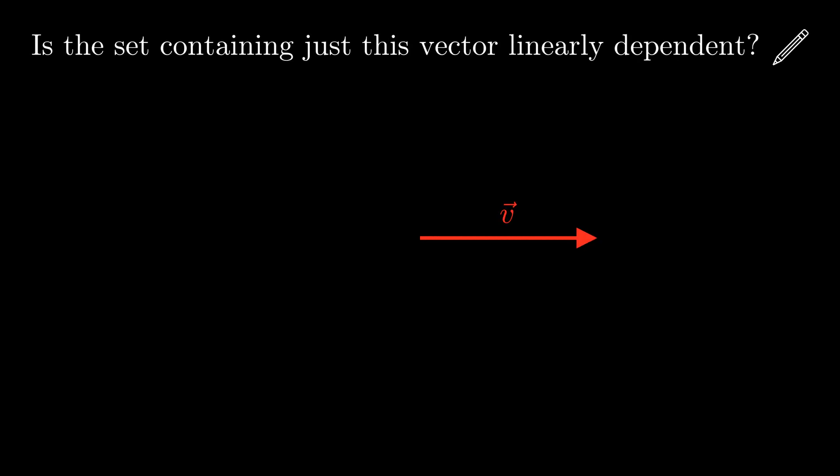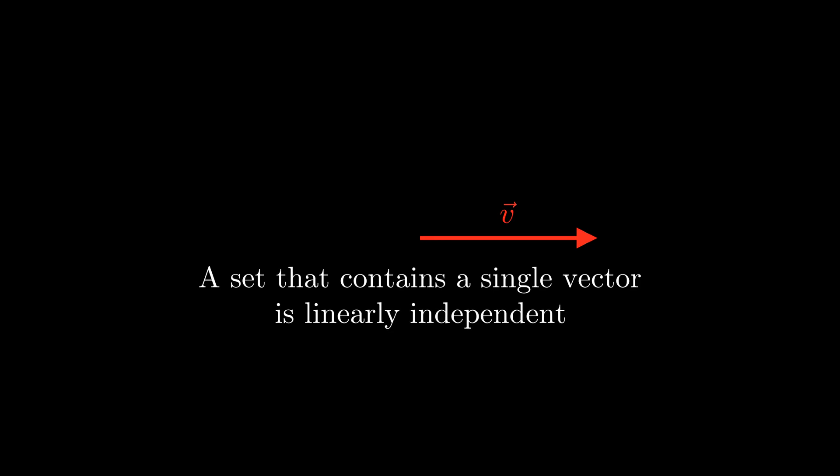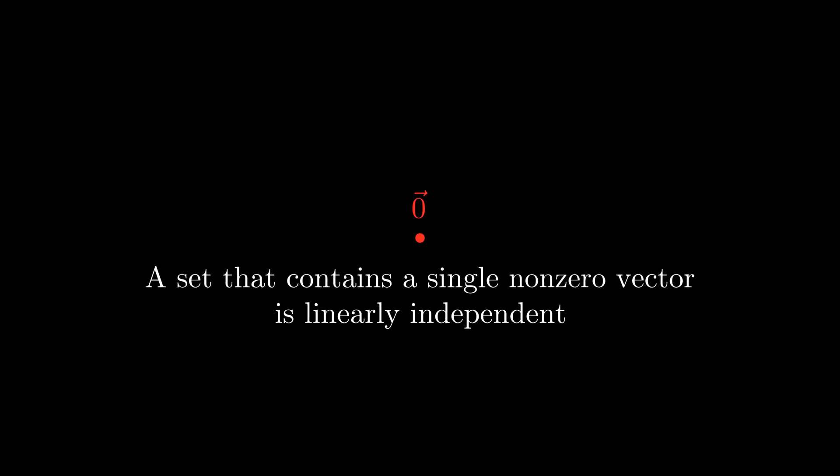Now, there's one more special case that I want to consider. What about a set containing only a single vector? Is the set containing just this vector linearly dependent? Well, the span of just this vector is this line. If we remove the vector, we have nothing left. So what's the span of no vectors? We can't go anywhere without any vectors. Well, we usually think of ourselves as starting at the origin, so even without any vectors, we can at least reach the origin. So we say that the span of no vectors is just the zero vector. Removing the vector did change the span, showing that a set containing a single vector is linearly independent. Now, this argument actually fails for the zero vector, so it's only sets containing a single non-zero vector that are linearly independent.